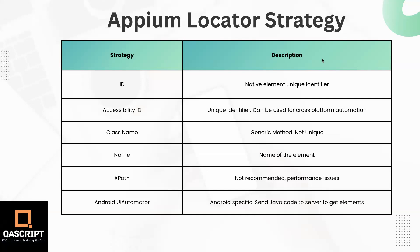Appium, by default, supports some of the WebDriver locator strategies like class name or XPath, but it has also got some out-of-box locator strategies using which you can identify different elements on your mobile applications. These different properties or attributes could be defined by your mobile developers, and using these, you can identify your elements in your mobile application.